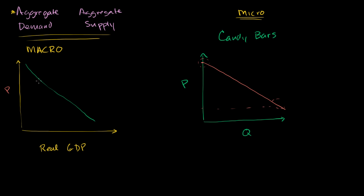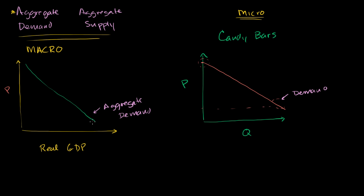Over here in the aggregate demand case, that is not what is happening. Aggregate demand is essentially saying how much productivity there will be in the economy as a function of price levels in the economy. There are three major theories why economists believe there is a downward sloping aggregate demand curve.